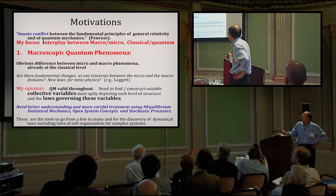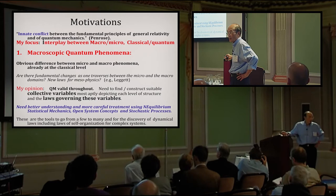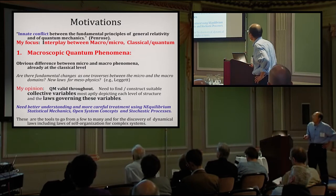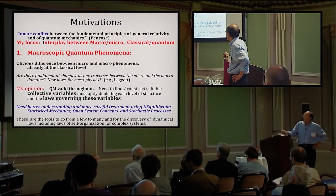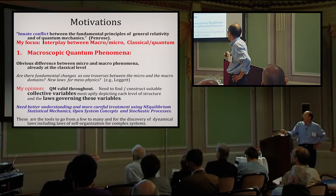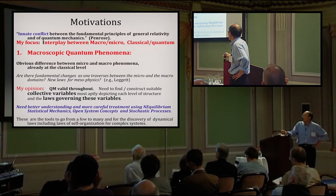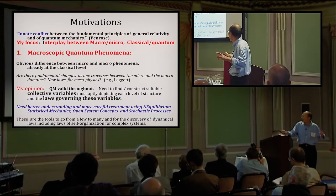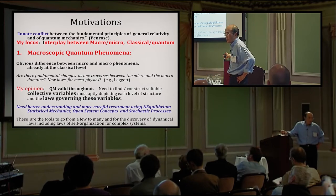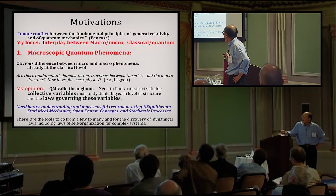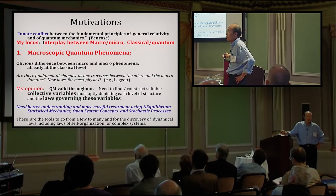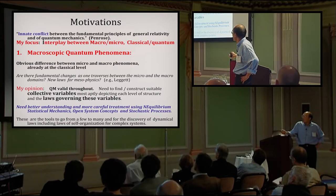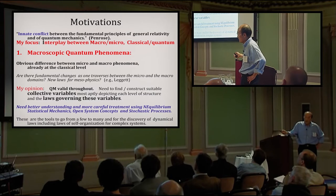So I start out with three motivations. There's obvious difference between micro and macro phenomena already at the classical level. That's why we need statistical mechanics, thermodynamics to understand things happening at the macroscopic scale. Now, the question is, are there fundamental changes as one traverses between the micro and the macro domain? I'm referring to quantum physics now.